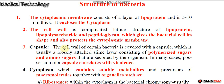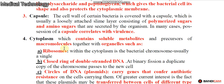This is part 2 of the structure of bacteria. The third structure of bacteria is the capsule, which covers the cell wall. It is usually a loosely attached slim layer consisting of polymerized sugars and amino sugars. The role of the capsule is very important in bacterial virulence, especially in phagocytosis.